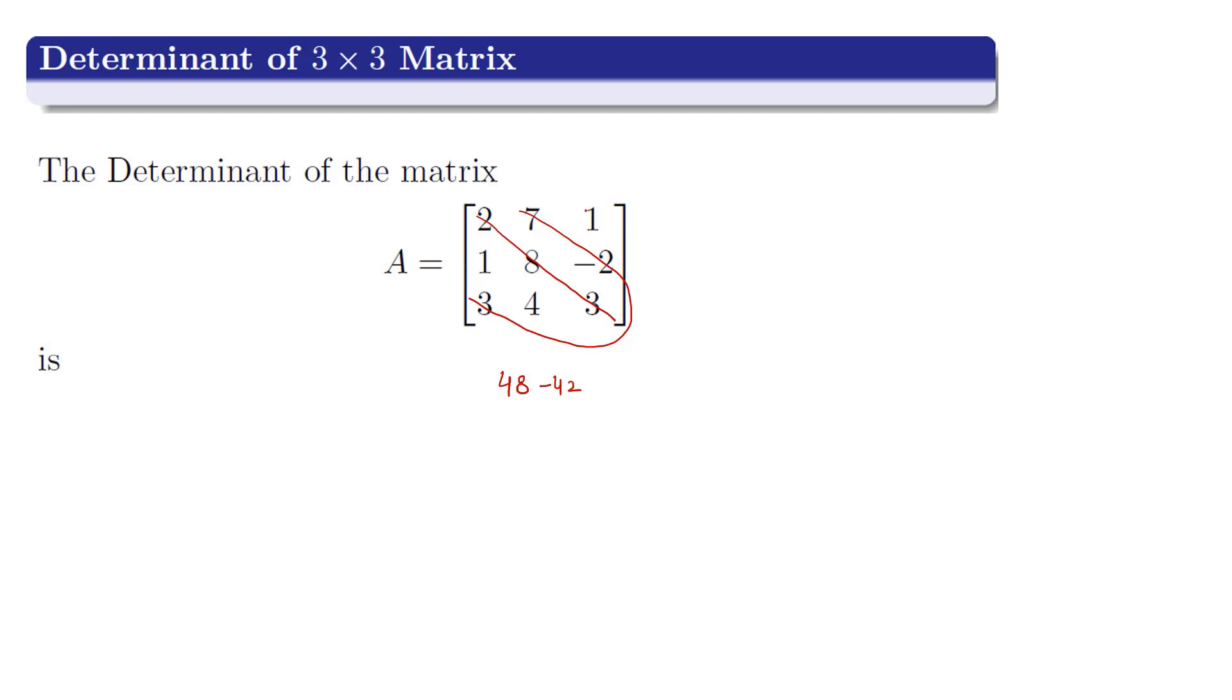Now multiply the element which is above the super diagonal with the element which is on the sub diagonal which is 4. Now repeat the procedure with the second diagonal.